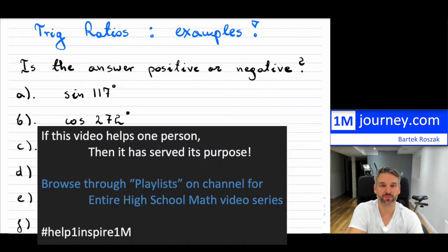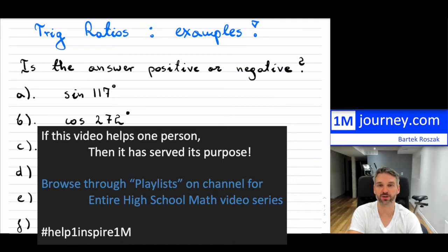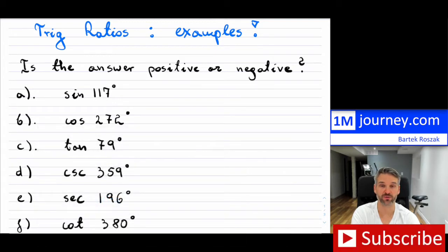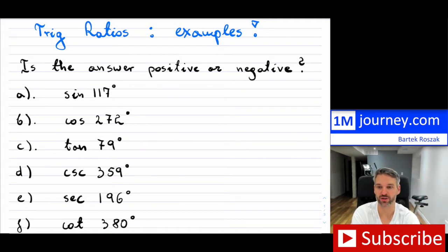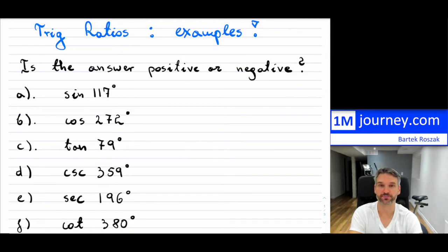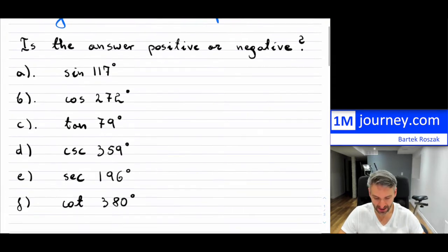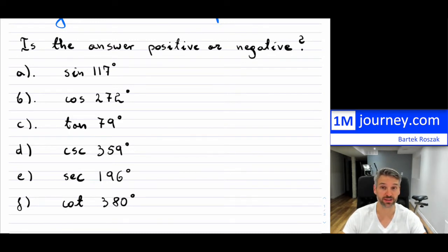Let's take a look at a few examples for trig ratios. I'm going to make the assumption that you've watched the video on trigonometric ratios for angles greater than 90 degrees — I'll put a link above. This is a continuation where I want to test if you understand the concepts. All I want to do is some computations to see if you understand the various ratios with regards to whether they're going to be positive or negative.